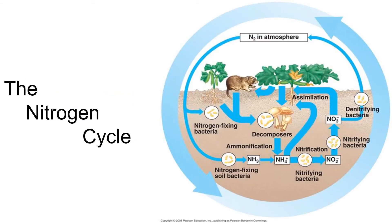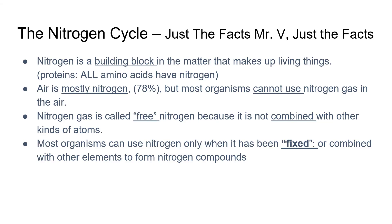The nitrogen cycle — just the facts. Nitrogen is a building block in the matter that makes up living things, such as proteins; all amino acids have nitrogen. Air is mostly nitrogen — 78% of what we breathe is nitrogen — but most organisms cannot use nitrogen gas that's in the air. Nitrogen gas is called free nitrogen because it is not combined with other kinds of atoms. Most organisms can only use nitrogen once it has been fixed, or combined with other elements, to form nitrogen compounds.